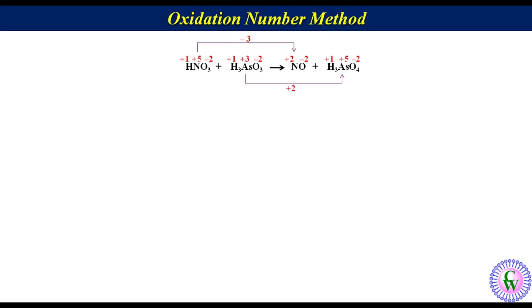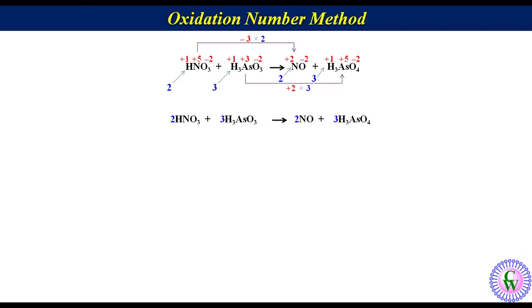Since the increase in oxidation number is not equal to the decrease, we multiply 3 by 2 and 2 by 3 to equalize them. So we place coefficient 2 before the nitrogen-containing species HNO3 and NO, and coefficient 3 before the arsenic-containing species H3AsO3 and H3AsO4. The equation becomes: 2HNO3 + 3H3AsO3 → 2NO + 3H3AsO4. Since both sides are neutral, no charge balancing is needed.